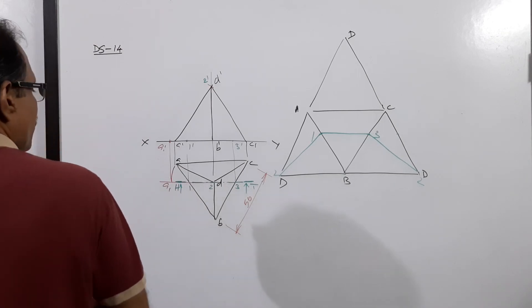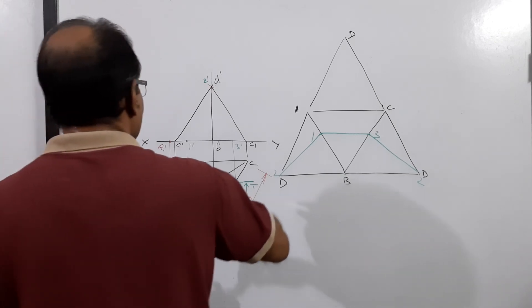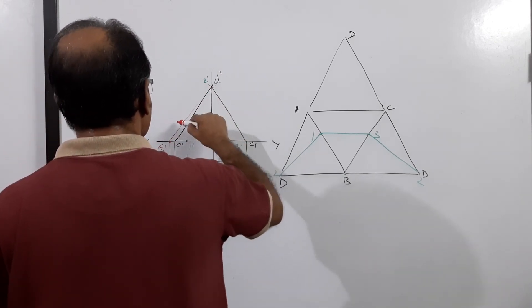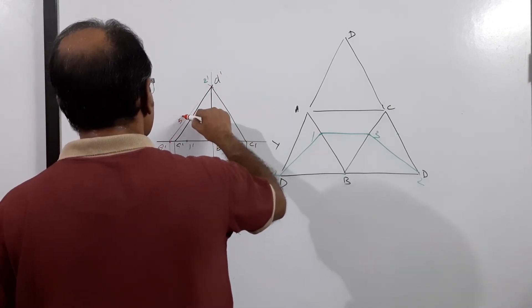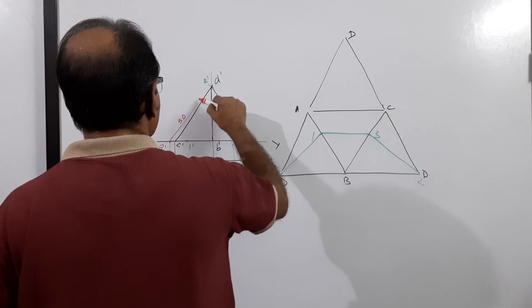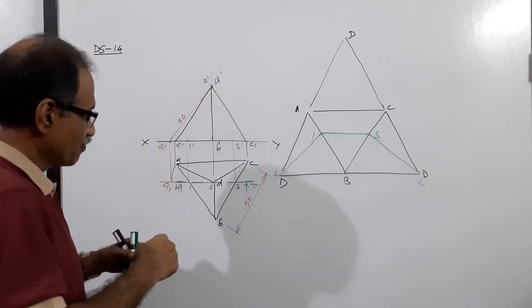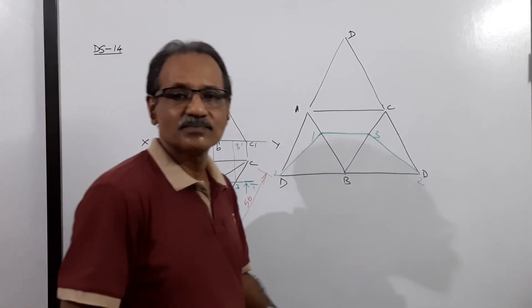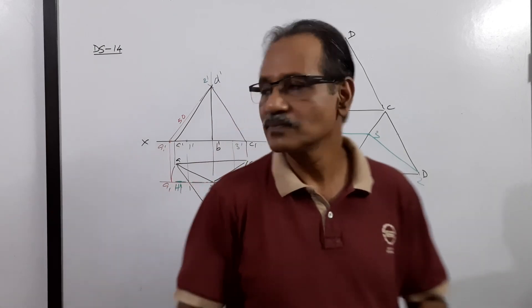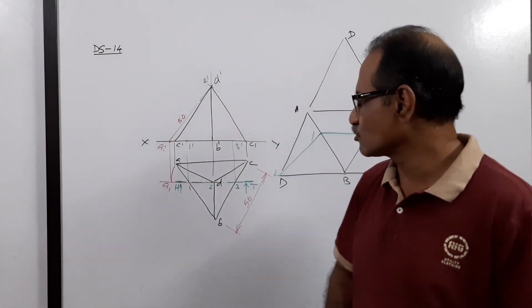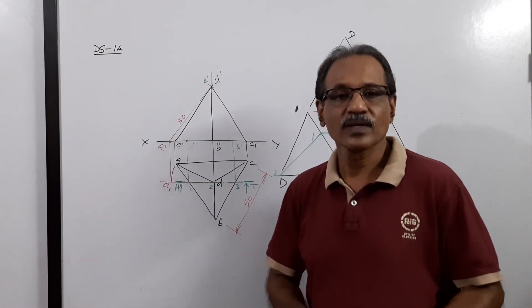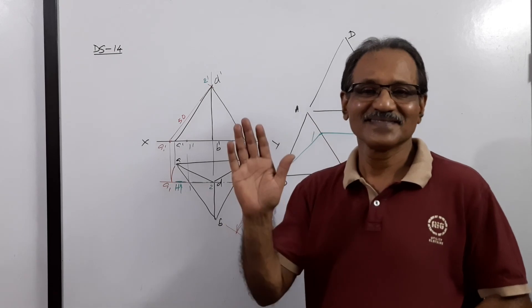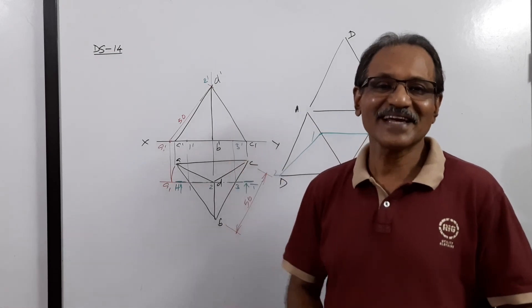The procedure for finding D dash is marked here — this is question 15. I hope you understand. It is a very interesting question. Thank you.